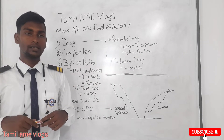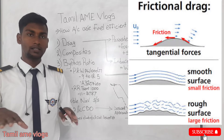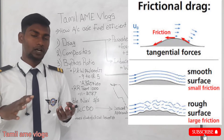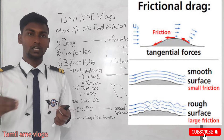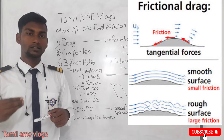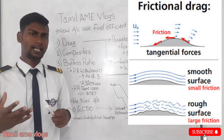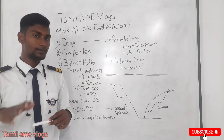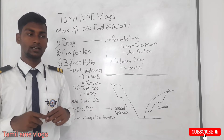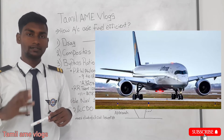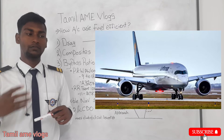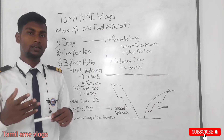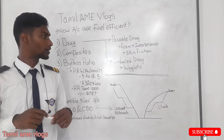Skin friction drag occurs when the surface is not polished. If a rough surface is exposed to air, it causes turbulence while flying, and that turbulence causes drag — we call it skin friction drag. To reduce it, we need to highly polish the aircraft surface. That is why aircraft surfaces are so highly polished that you can see your reflection in them.